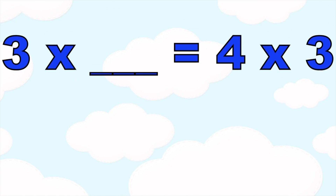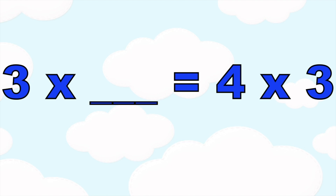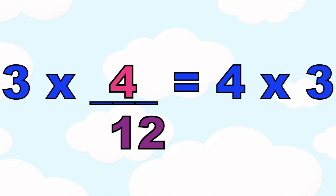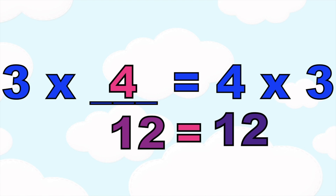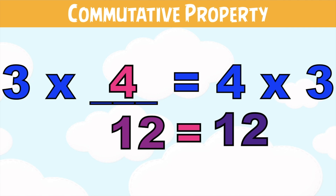How about if we have this: 3 times blank is equal to 4 times 3. What is the missing number? That's correct — it's 4. Because 3 times 4 is equal to 12, and 4 times 3 is equal to 12. This is because of the commutative property of multiplication — even though you interchange the position of the two factors, their product will remain the same.